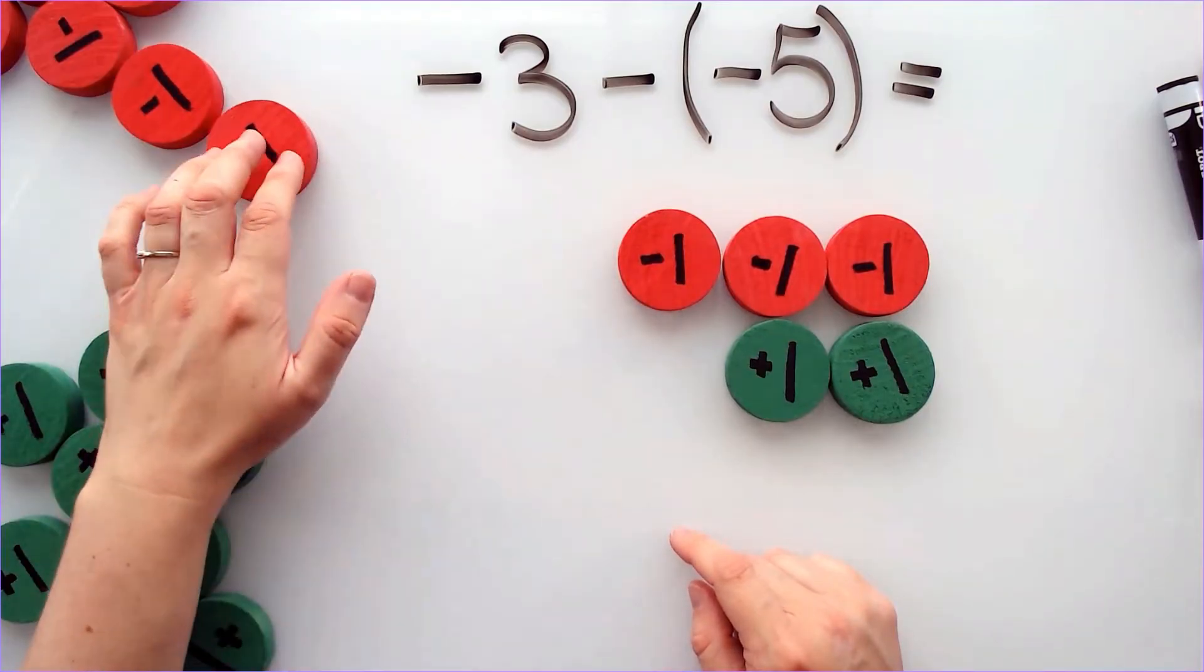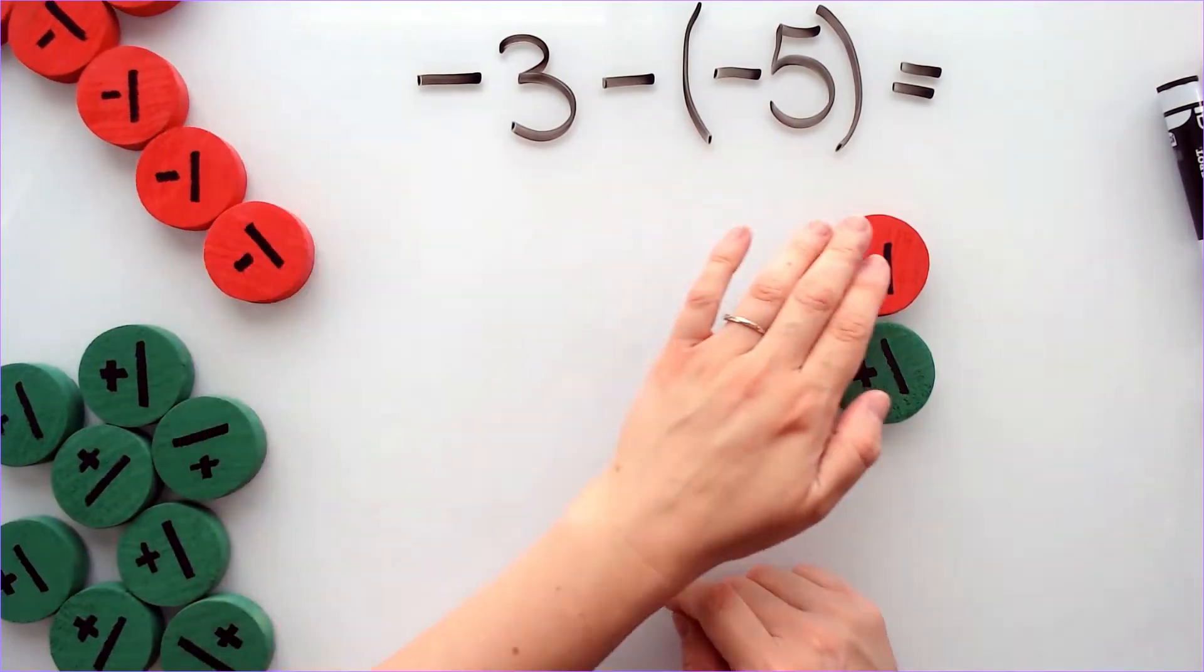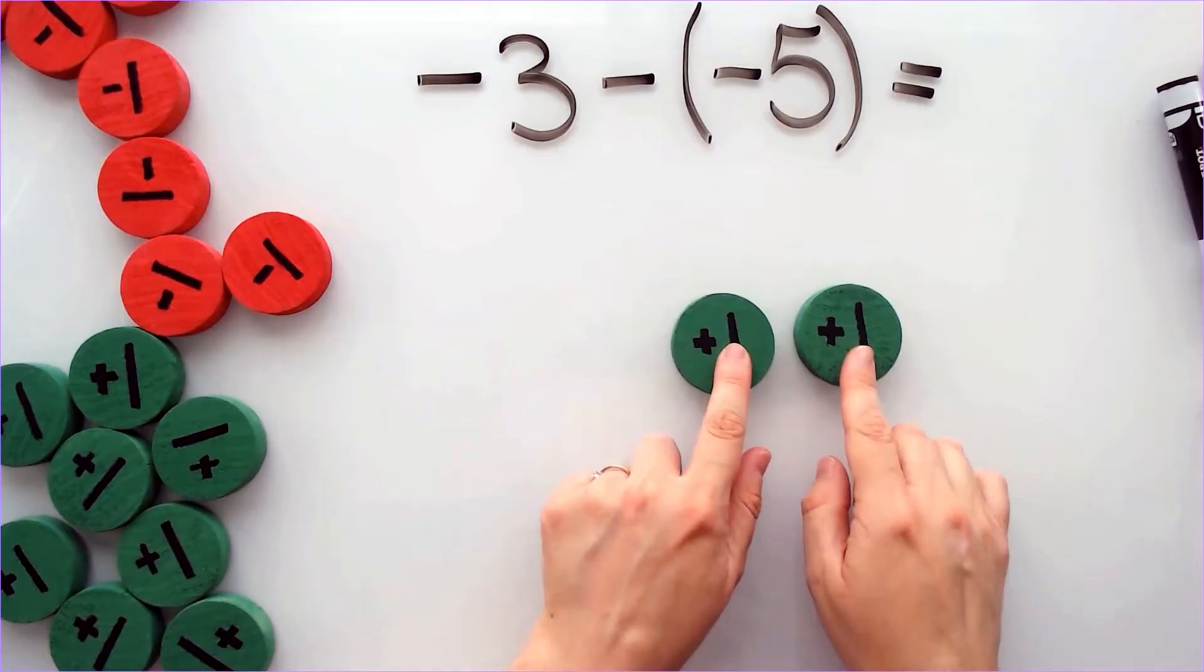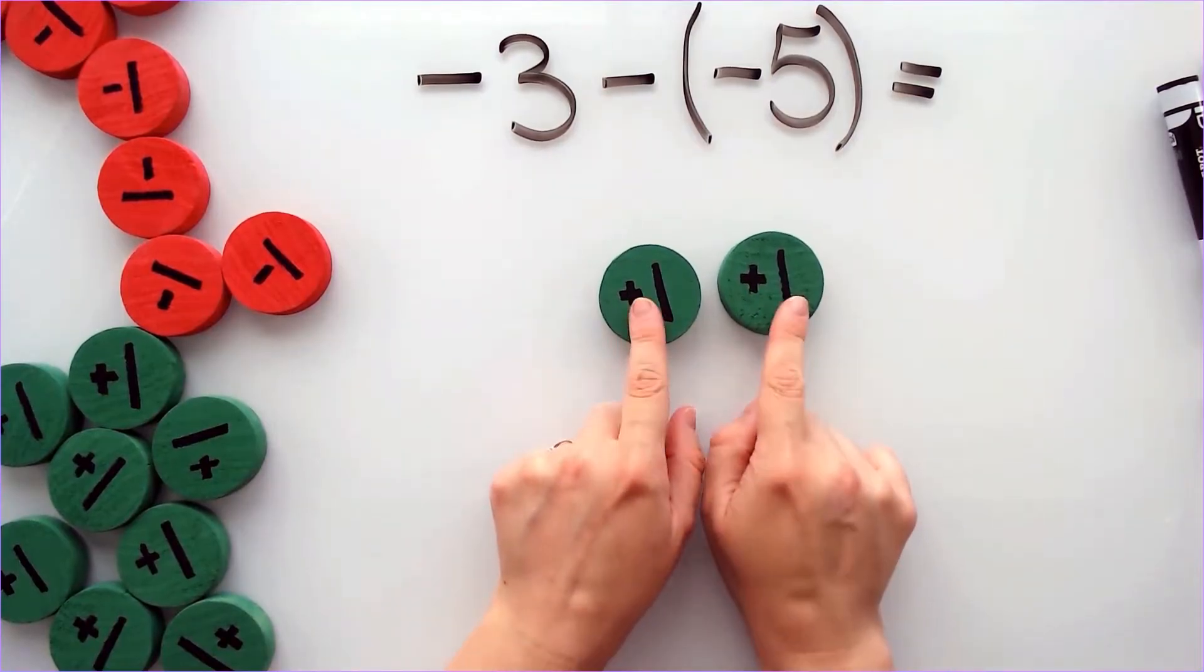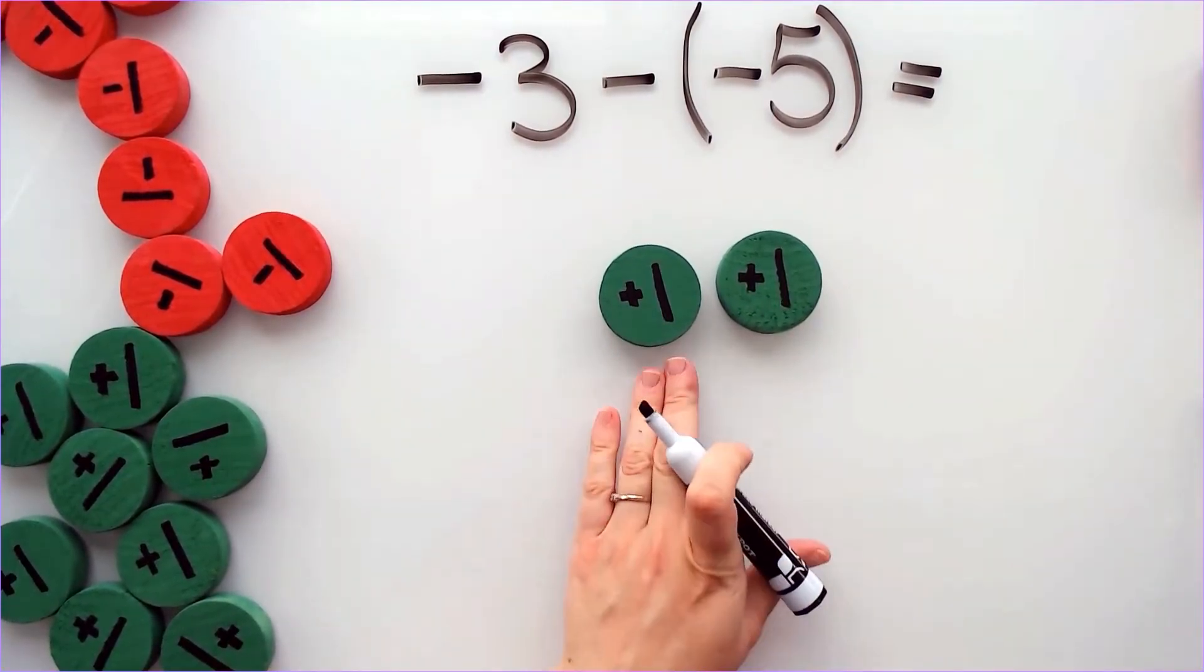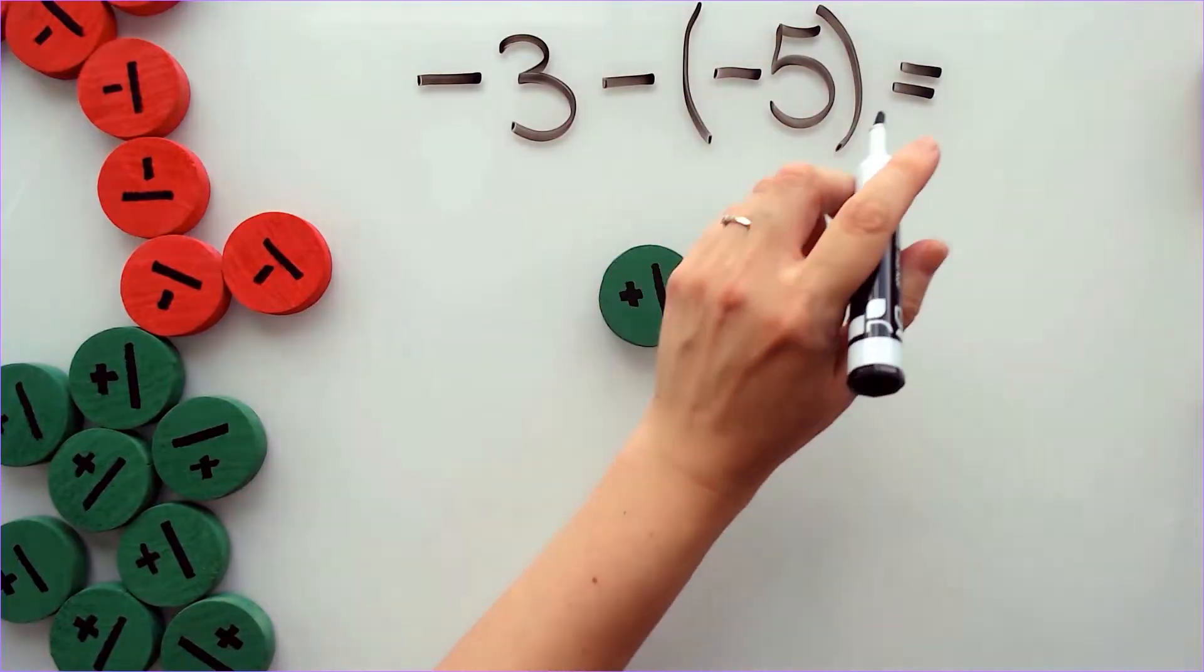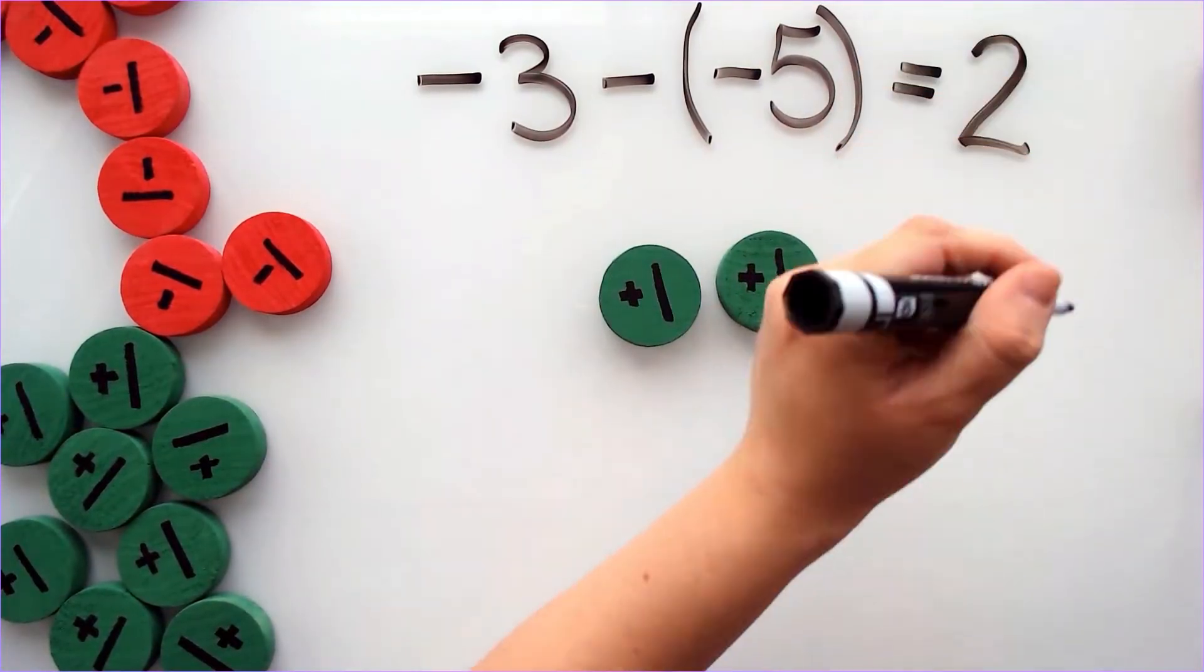Okay, now I have negative 5 so I can get rid of negative 5. So I'm going to go 1, 2, 3, 4, 5. And my answer is positive 2 because I have 2 green counters. 1 plus 1 will give me 2.